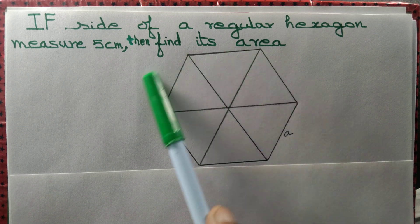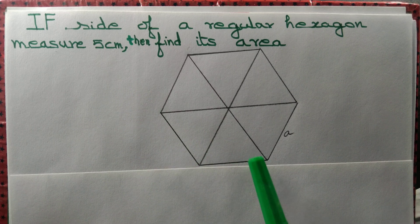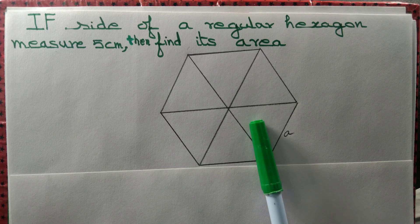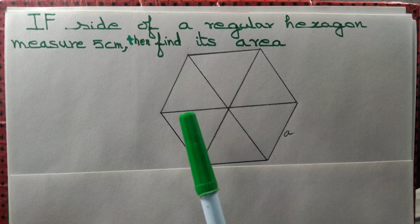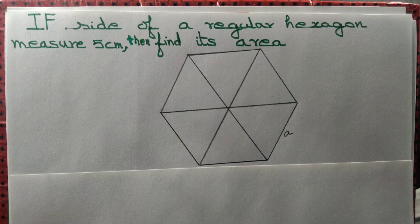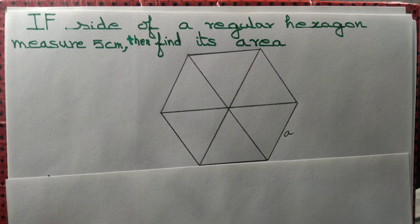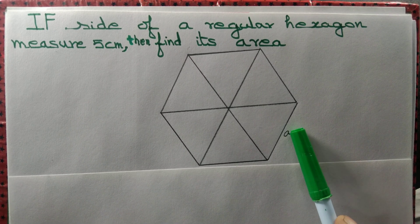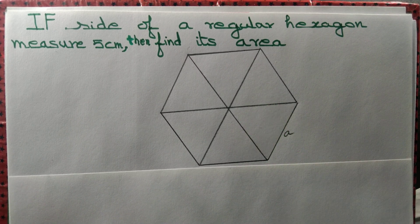We have a regular hexagon. We join some of the diagonals that pass through the center of the hexagon. Observe that we get 1, 2, 3, 4, 5, 6 — 6 equilateral triangles, each having side a unit, if the side of the regular hexagon measures a unit.